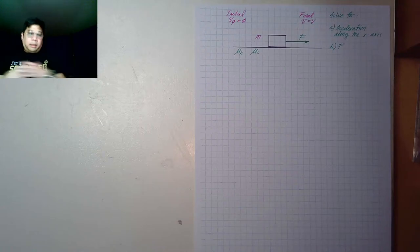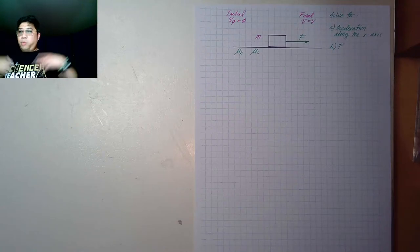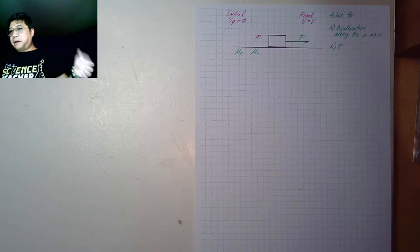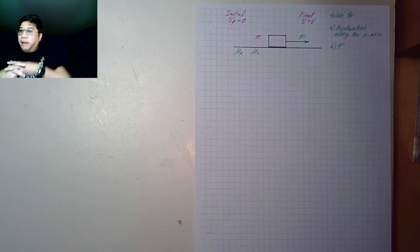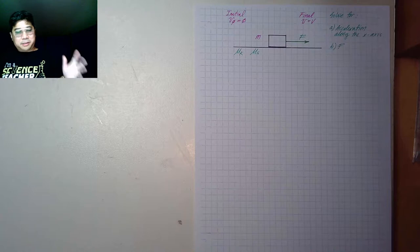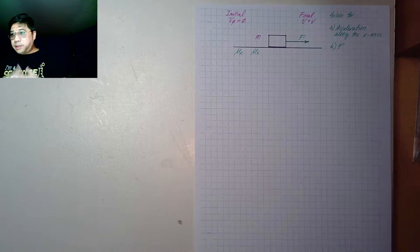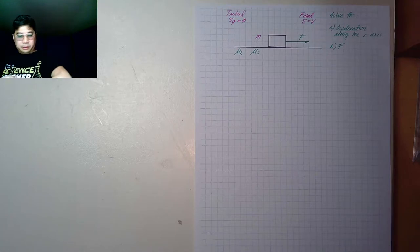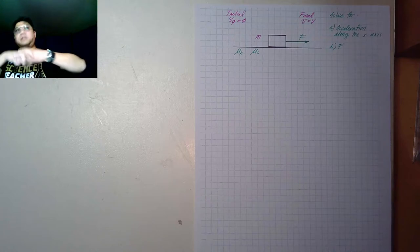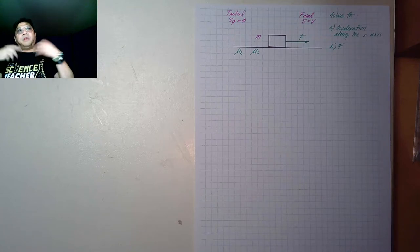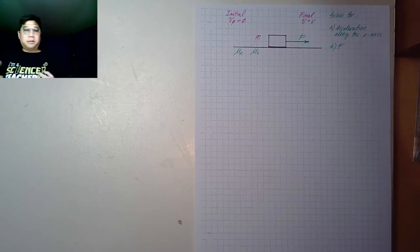Hi and welcome back. Today we will be analyzing our block with different information again, but this time it's not going to be the same as the two previous videos. At this point we have two different conditions in terms of state of motion. The state of motion is different from the initial to the final condition.